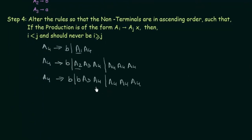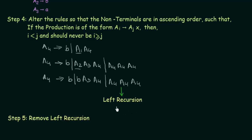However, we still have A4 gives A4 A4 A4. Here i is 4 and j is also 4, so i equals j — which is also not allowed by step four. This condition is known as left recursion. Step number five is to remove left recursion, which we will discuss in the next lecture.